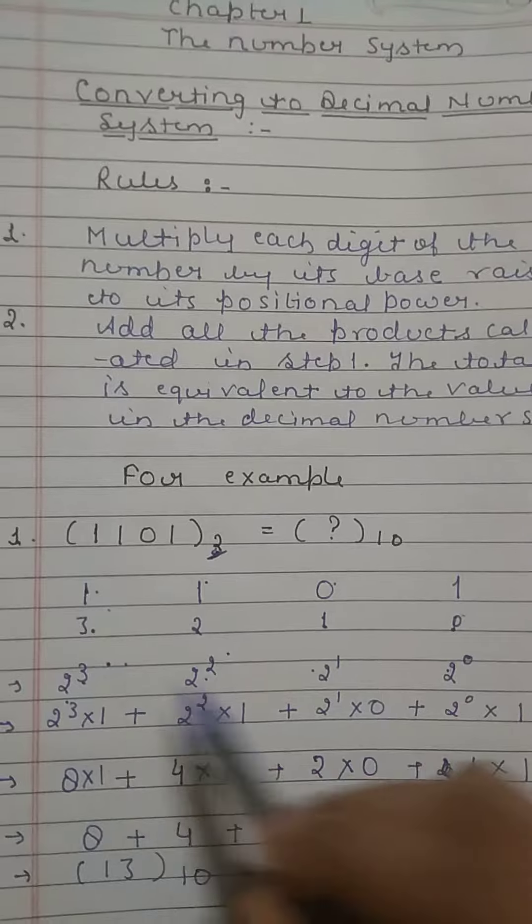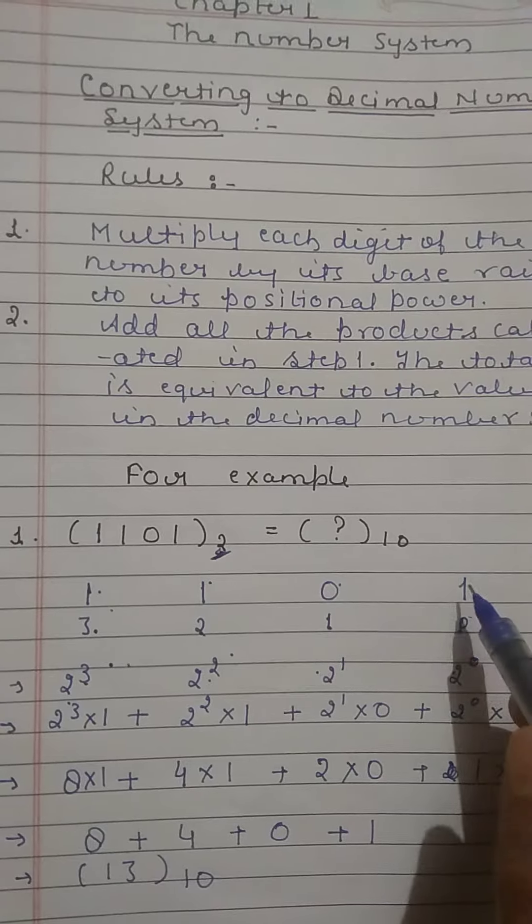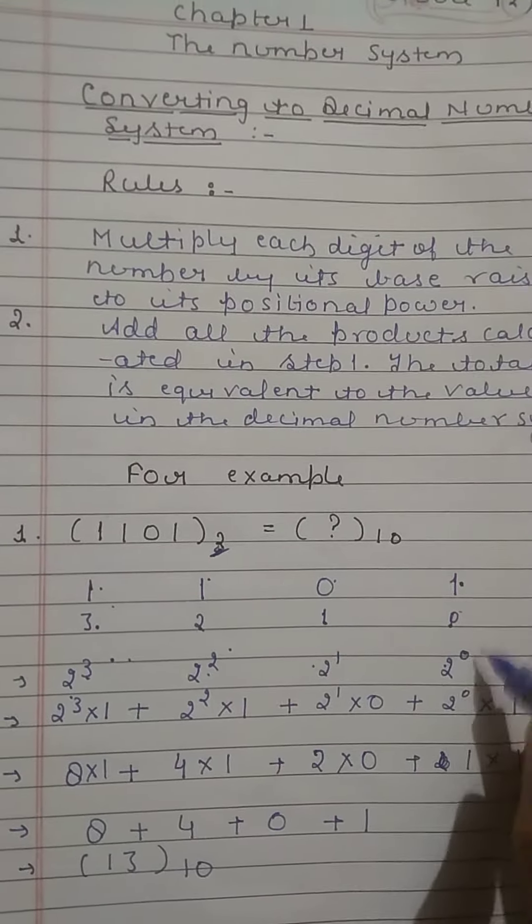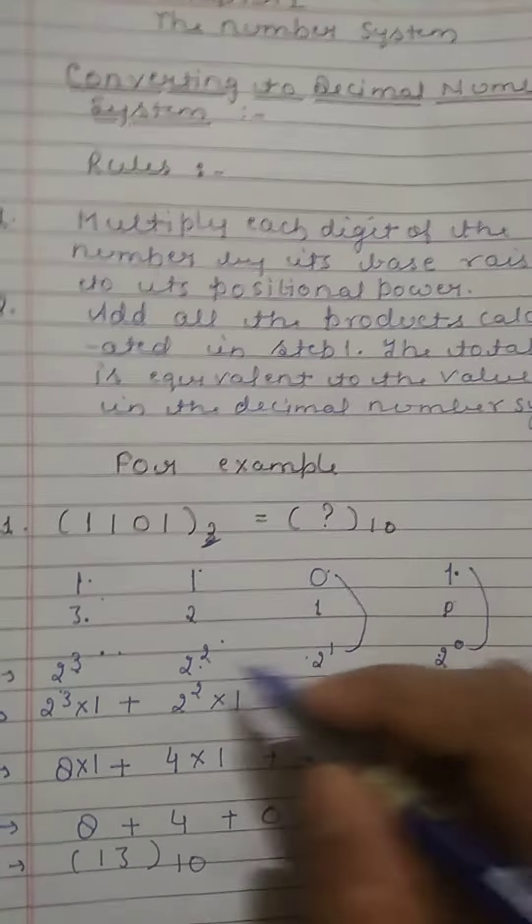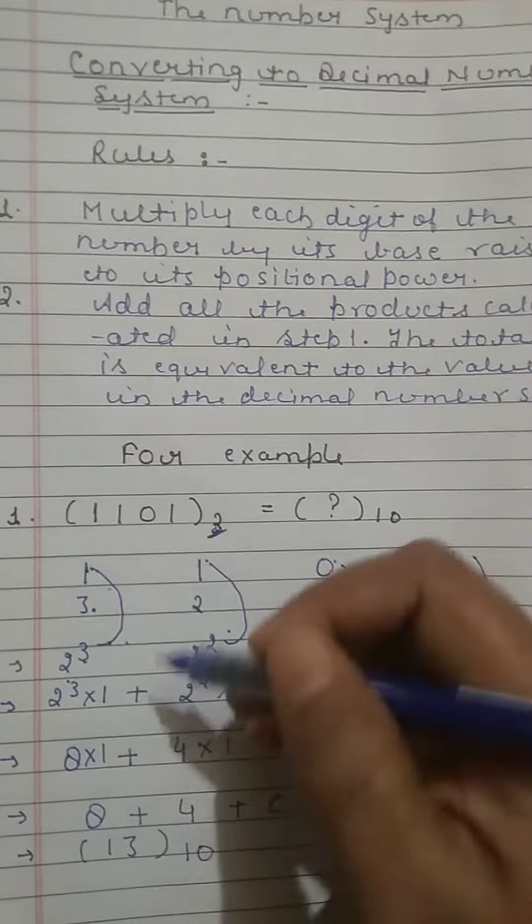Then after, each power of the base will be multiplied by the digit separately. So 2 to the power 0 into 1, 2 to the power 1 into 0, 2 to the power 2 into 1, and 2 to the power 3 into 1.